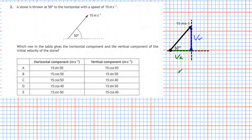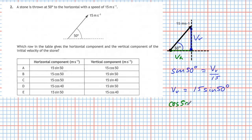For the vertical component, sine is opposite over hypotenuse, so sine 50° equals vv divided by 15. Cross-multiplying gives vv equals 15 sin 50°. For the horizontal component, cosine of 50° equals the adjacent side vh divided by the hypotenuse 15, so cross-multiplying gives vh equals 15 cos 50°.